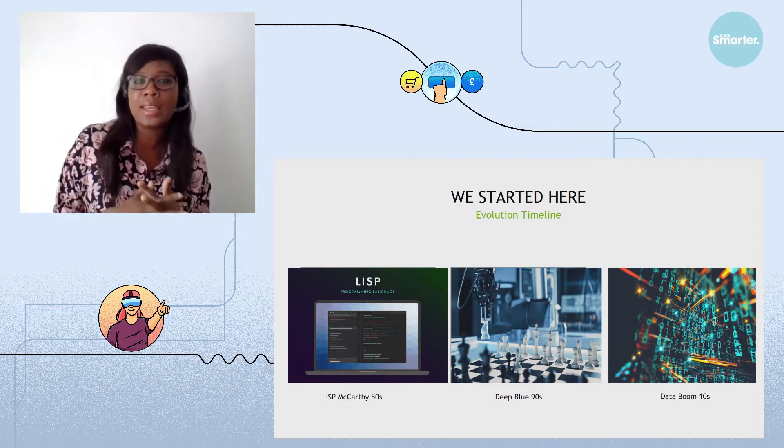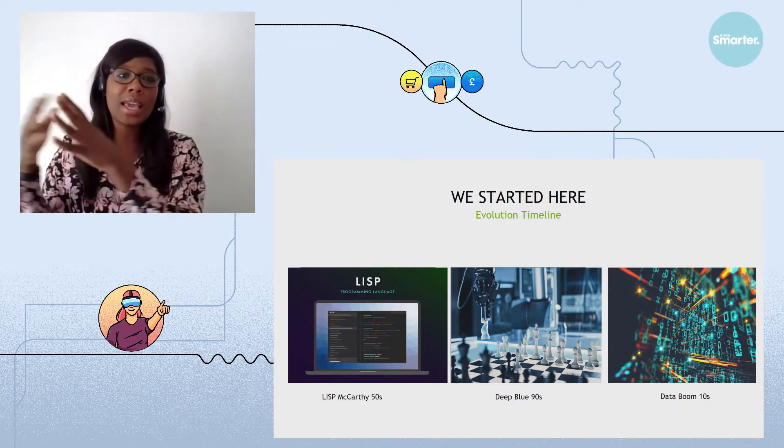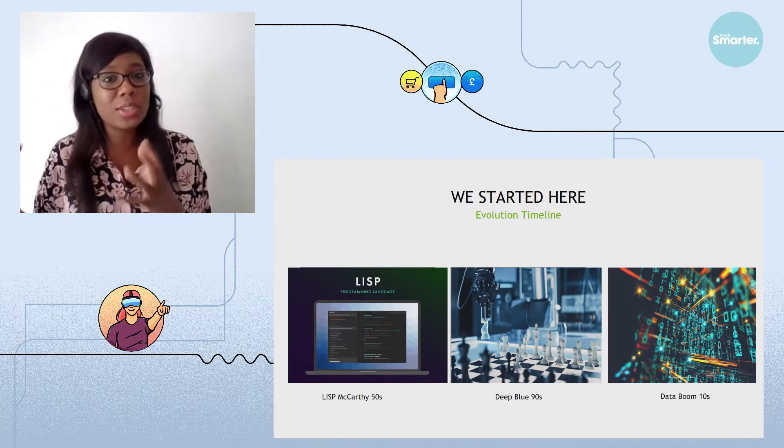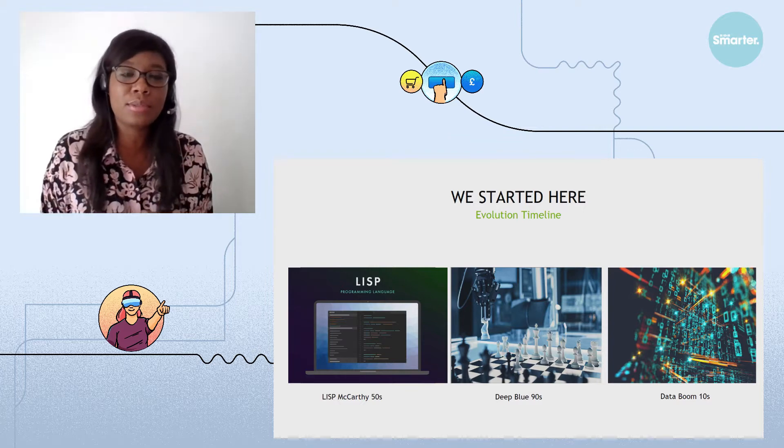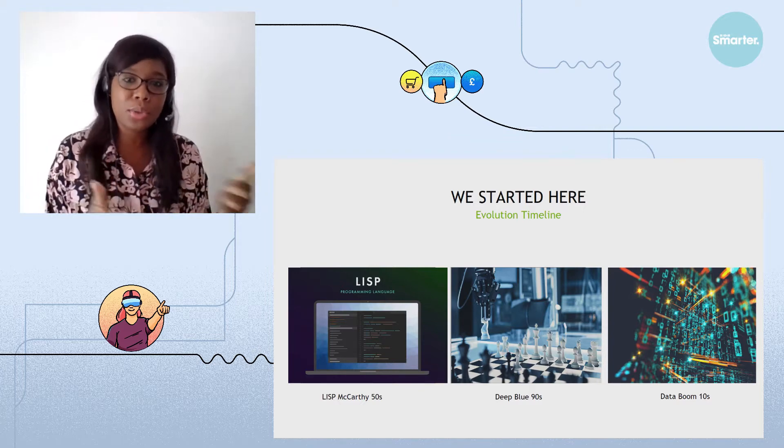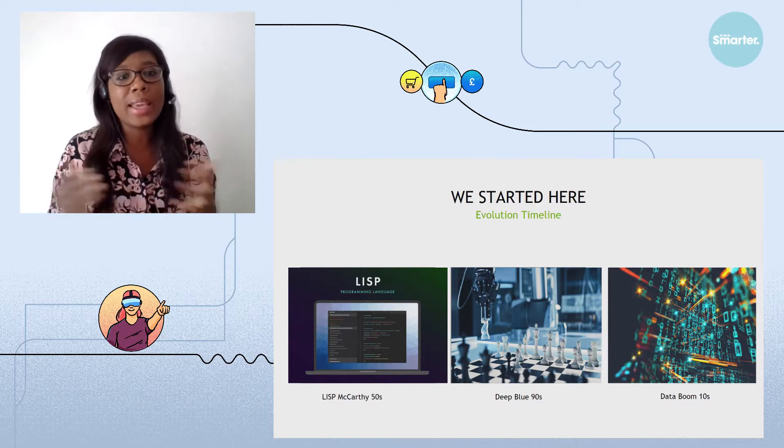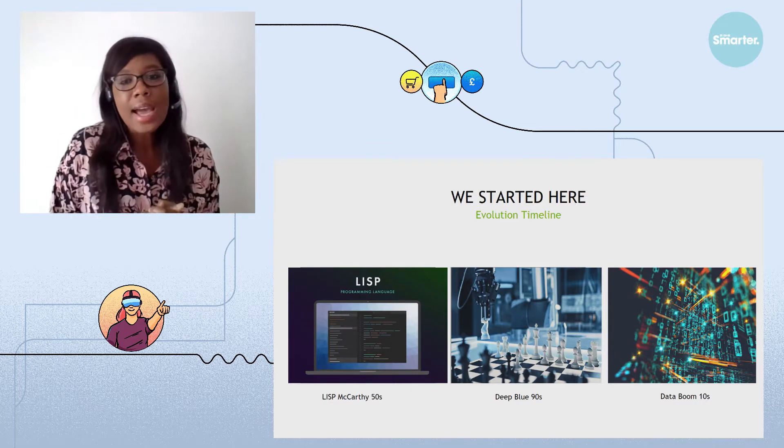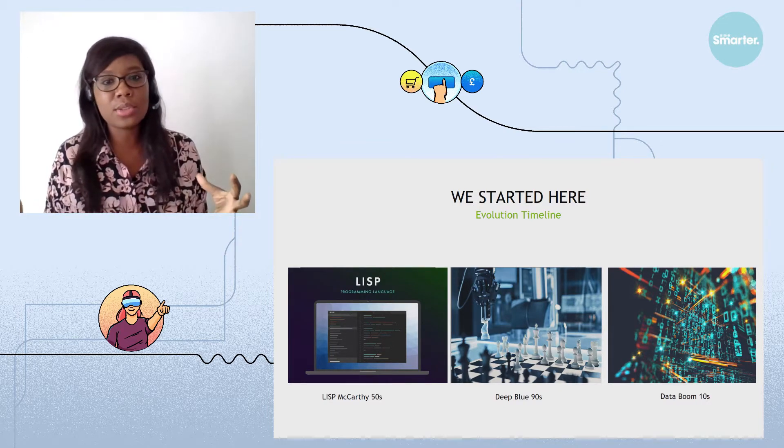The first person to use the term AI was John McCarthy in the 50s. He invented the LISP programming language and that triggered a frenzy in terms of research to try to figure out how we could make computers think like humans. AI went through a couple of winters. And the reason why it went through winters is because while the research was advancing, we didn't have computational platforms with enough computational power to support the complex workloads that these researchers were coming up with.